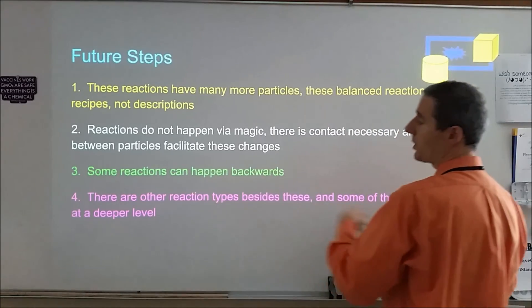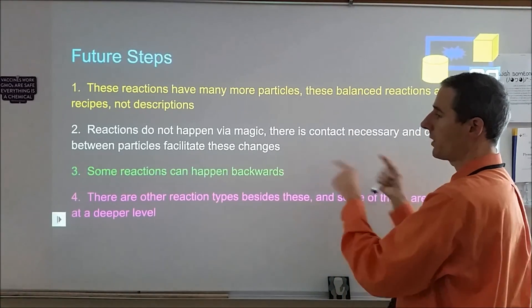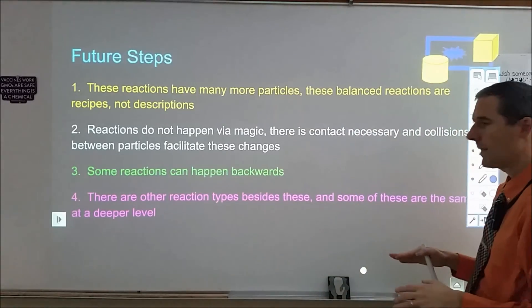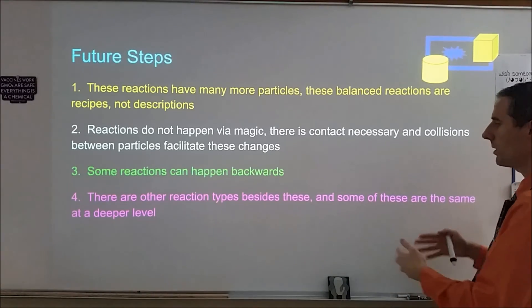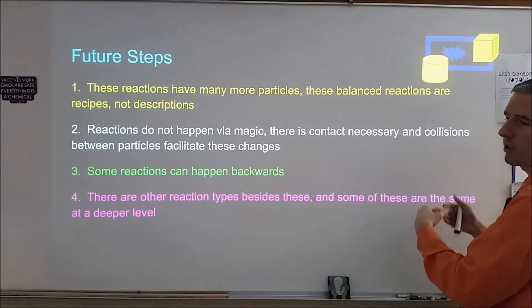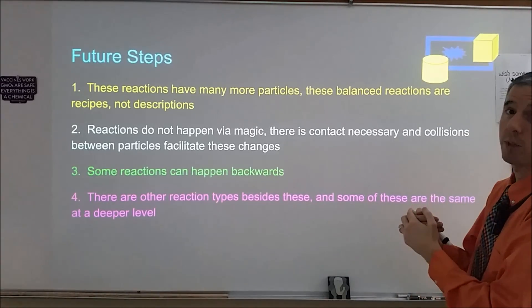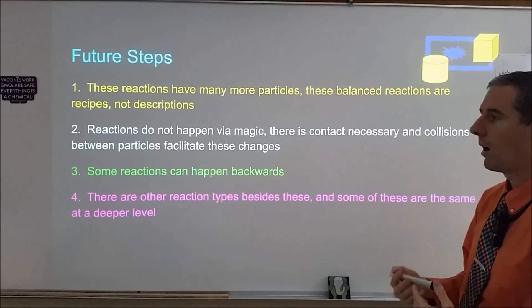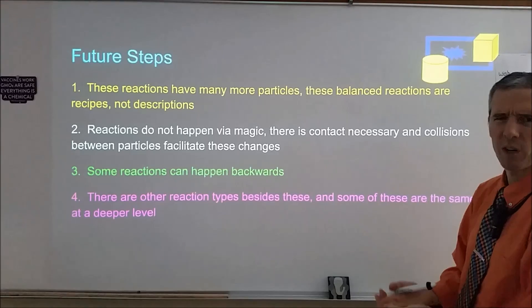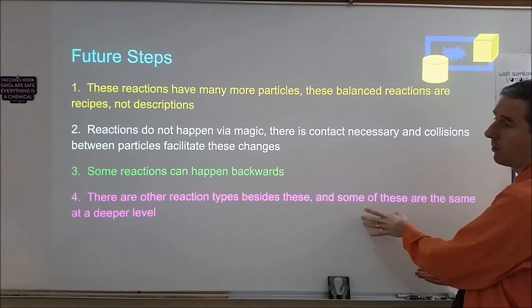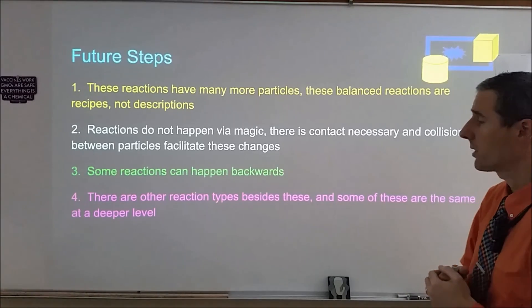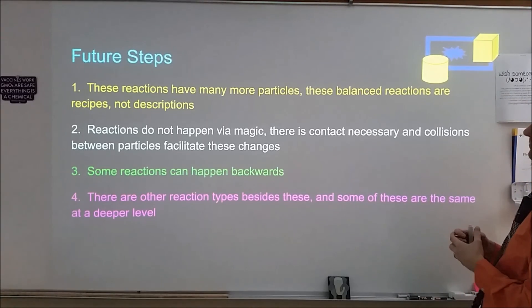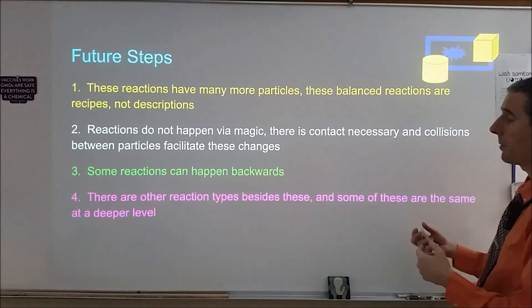Later, you may learn that some of these reactions can proceed in reverse, setting up an equilibrium between forward and backward reactions. There are also many other reaction types beyond these five — especially in organic chemistry — including substitution, elimination, and complexation reactions. At a deeper electronic level, you'll find commonalities between combustion, single replacement, synthesis, decomposition, and these other reaction types, particularly through the lens of redox chemistry.